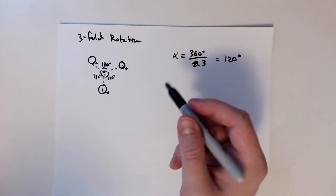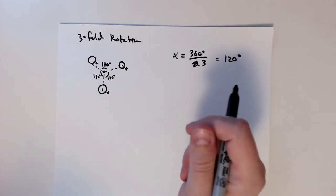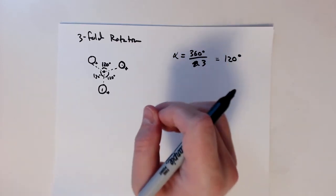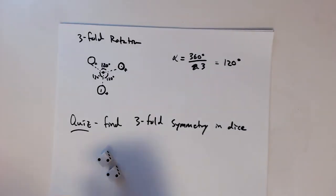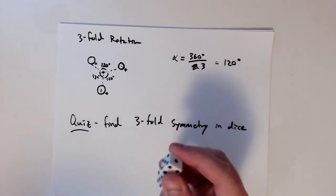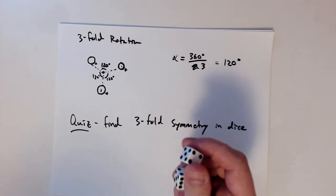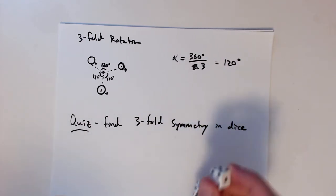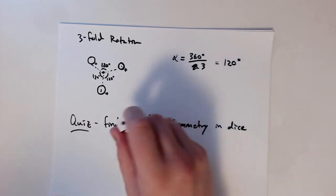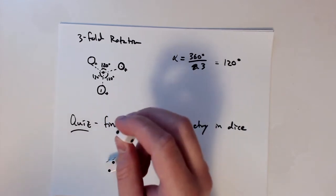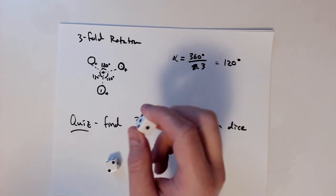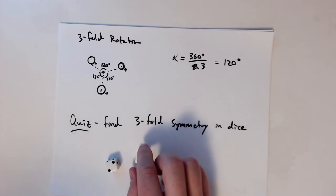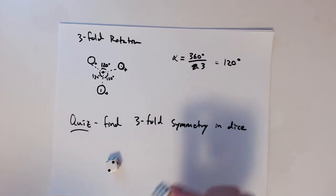One example is a die — the kind you use in board games. There are examples of threefold rotation in a die. This will also be on the quiz, so pause here and go find a die. Try to determine where the threefold symmetry is — how you have to hold it and which axis gives you that threefold rotation. See if you can find it.